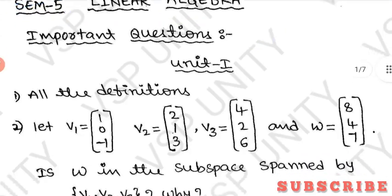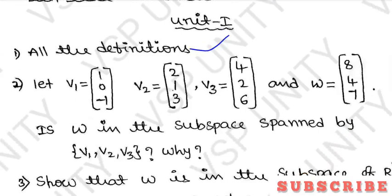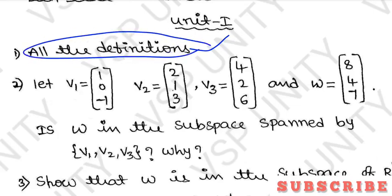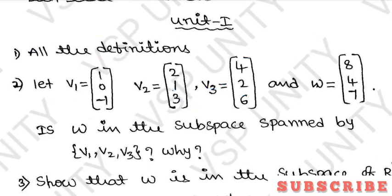From the first unit, the first important thing is: all definitions. Definitions may appear as long answers. Now in algebra and real analysis question papers, definitions are being asked in long answer and short answer formats. So definitions like vector space, vector subspace, null space, column space — all definitions are very important. We need clarity on all these definitions.